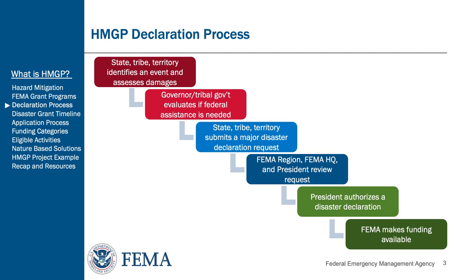HMGP funding is only made available after a presidentially declared major disaster. Here you see an outline of the disaster declaration process. The first step is for the state, tribe, or territory to identify an event and assess damages. Next, the governor or tribal government evaluates if they need federal assistance. If so, the state, tribe, or territory submits a major disaster declaration request. FEMA Region and FEMA Headquarters review and approve the request, which is then sent to the president for review and approval. The president then authorizes a disaster declaration, and lastly, FEMA makes disaster funding available. A portion of this funding is authorized for HMGP.